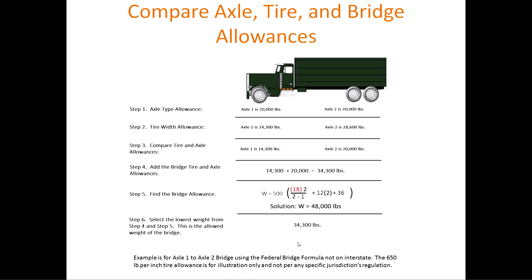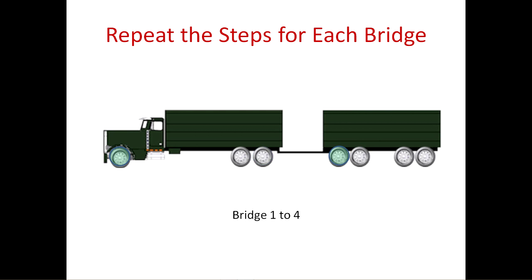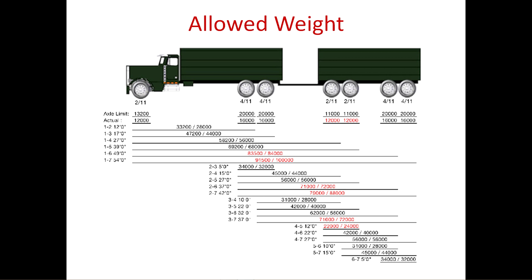This example is for axle one to axle two using the Federal Bridge Formula, not on the interstate. The 650-pound-per-inch tire allowance is for illustration only and not per any specific jurisdiction's regulation. We complete finding what the truck is allowed to haul by doing the six steps for each bridge within the truck. The result is the allowed weight.